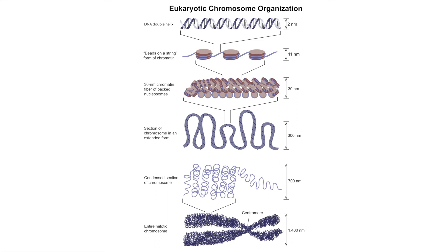When the DNA wraps around the histone proteins, they form the nucleosome. In between nucleosomes there are some DNA fibers. If you look at this image, you can see that it has a beads-on-a-string structure, where the beads are the nucleosomes and the string is the DNA in between. A more formal name for this is chromatin fibers.